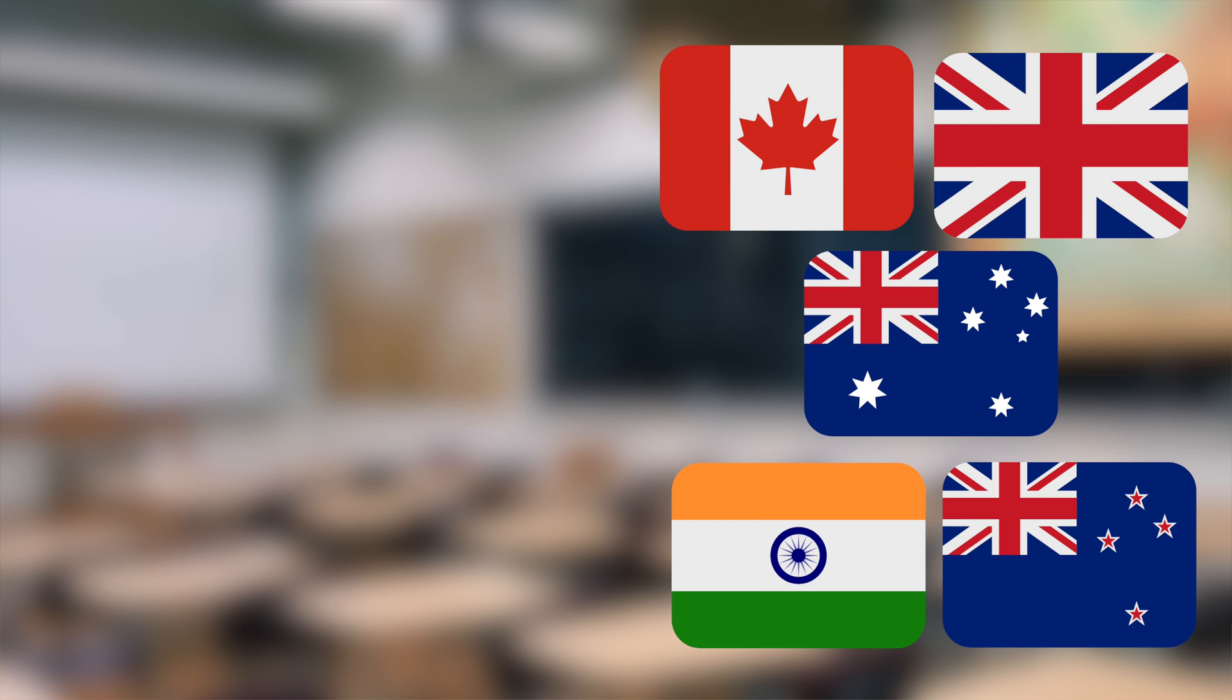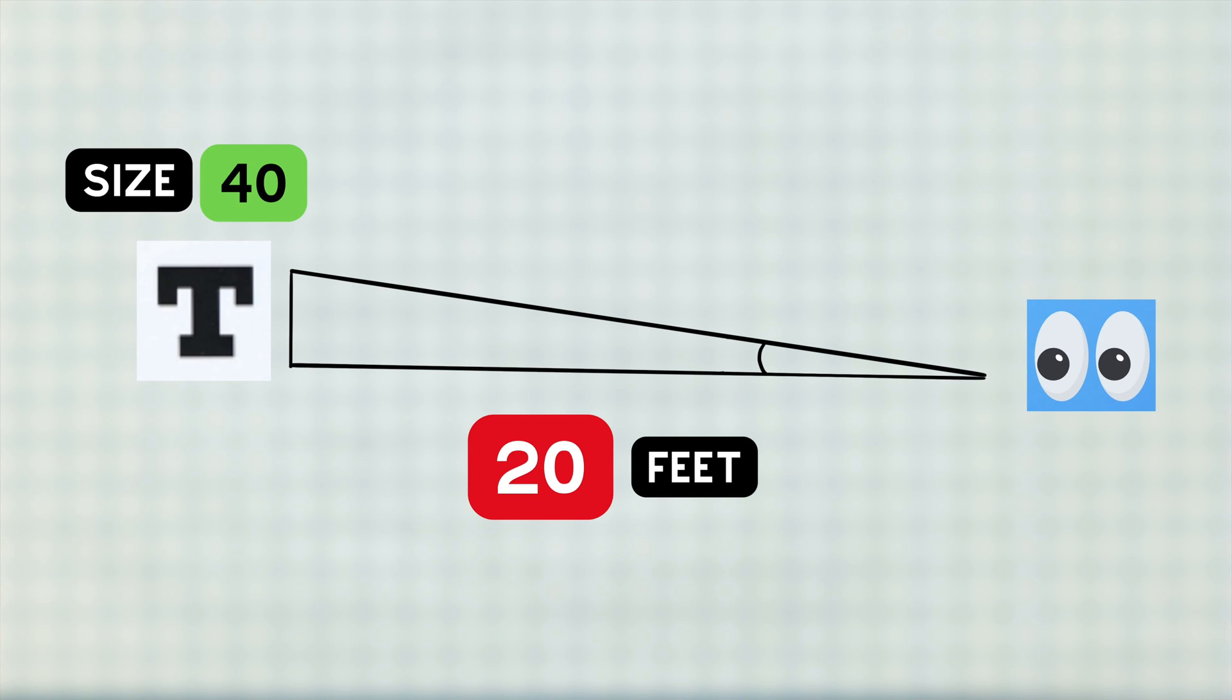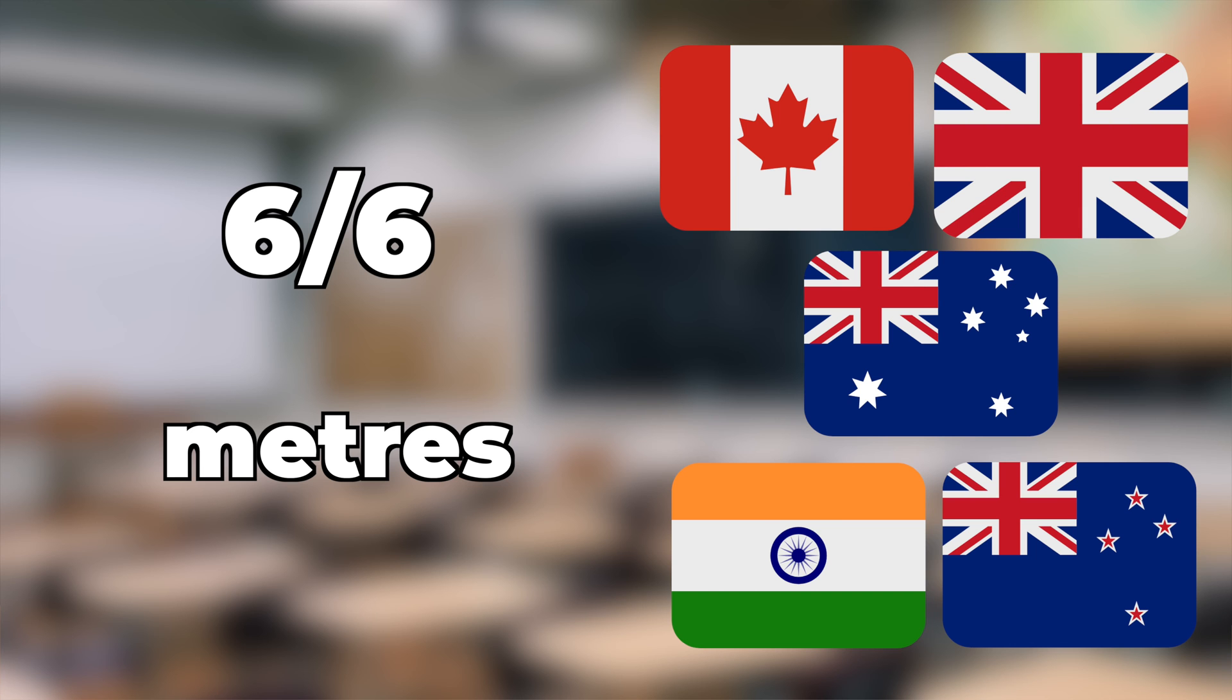Instead it goes by the term 6-6. It follows the exact same principle as 20-20 with all the triangles and everything, but all of the calculations are done in metres rather than feet.